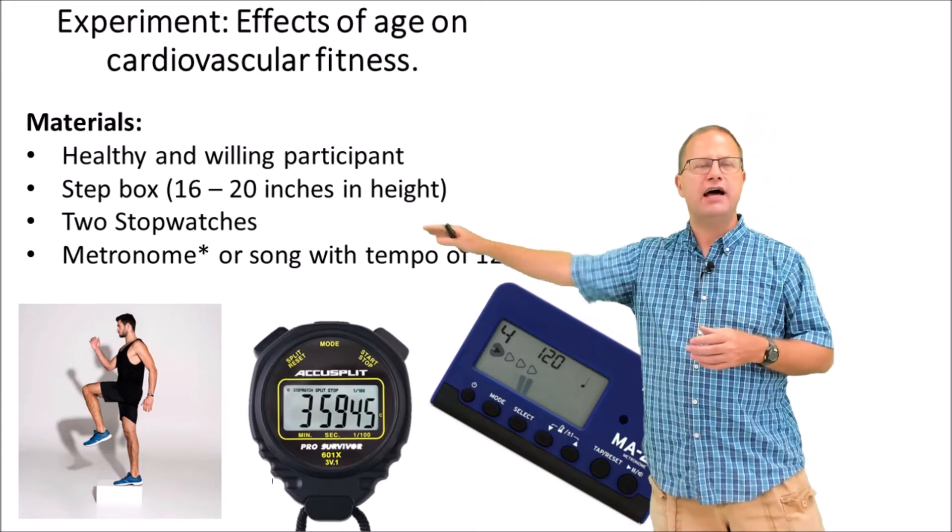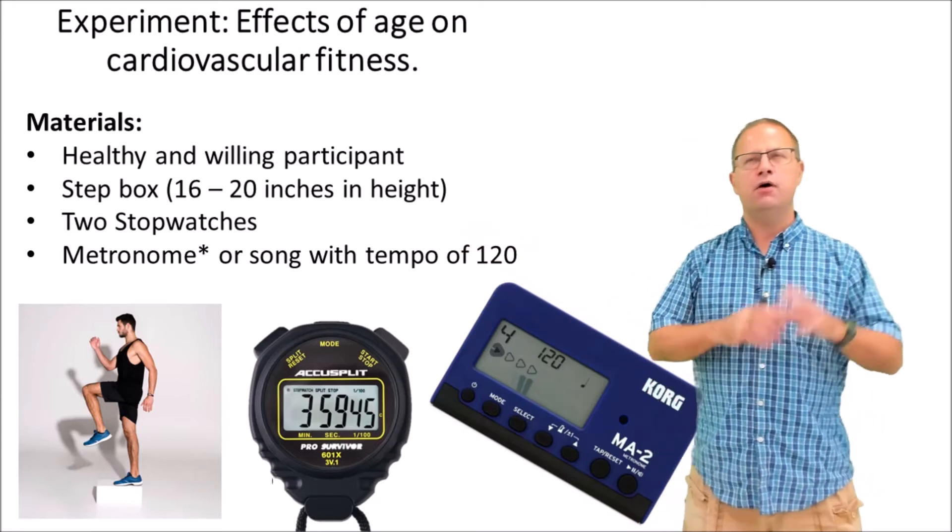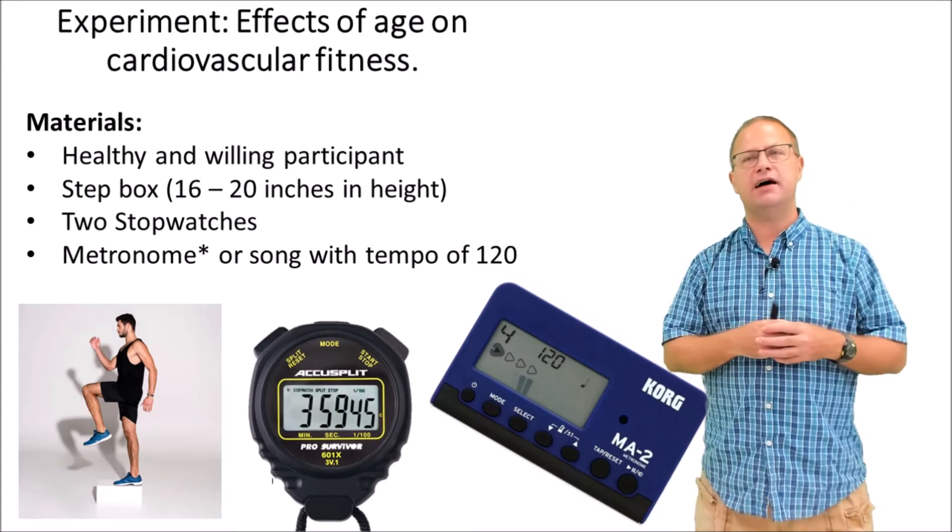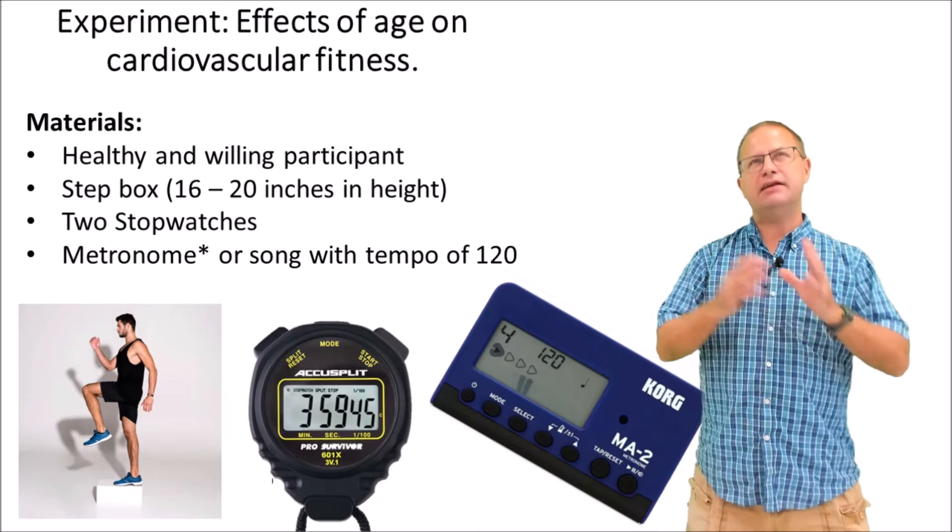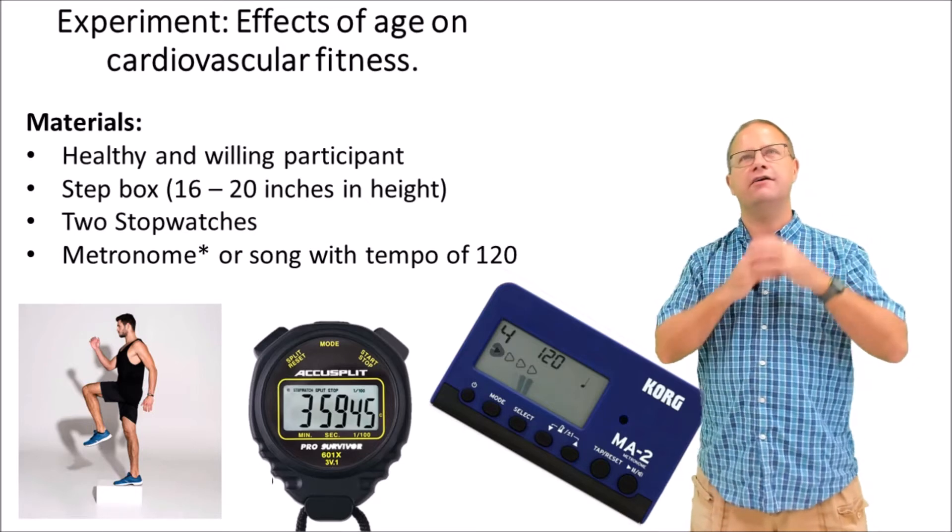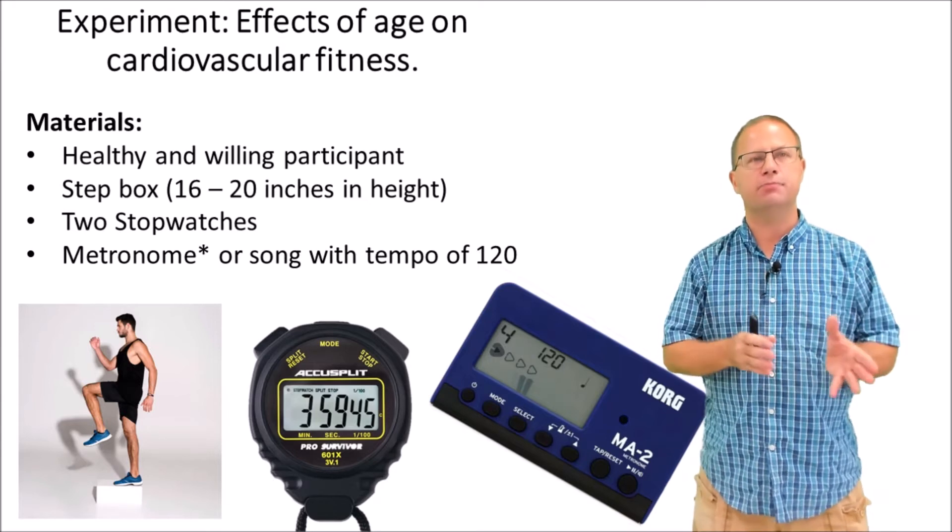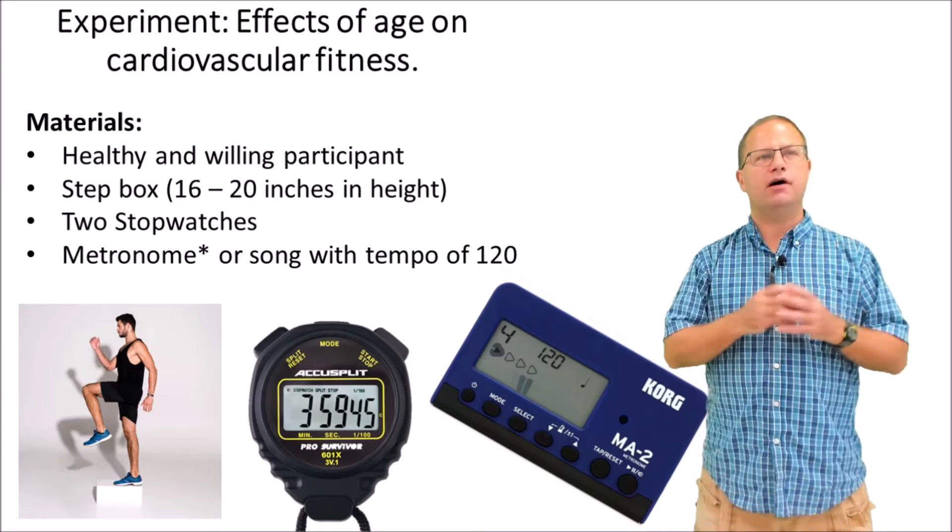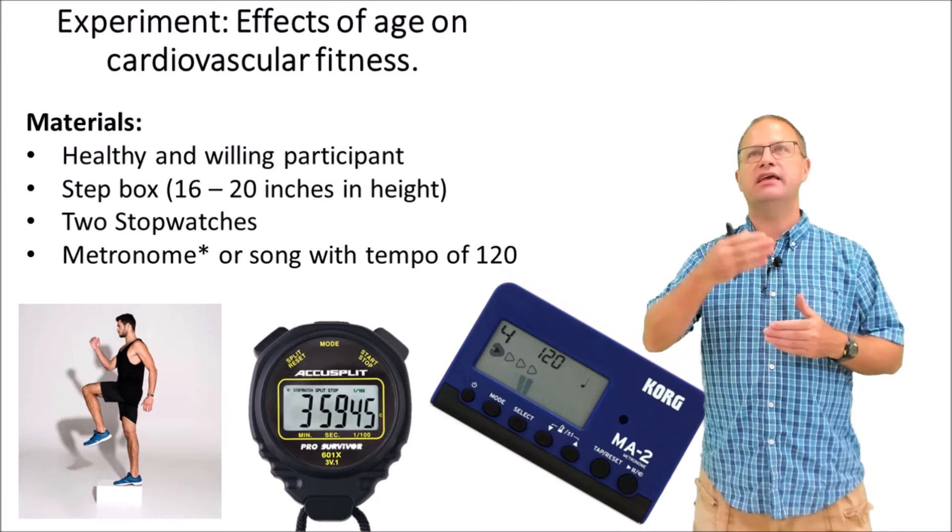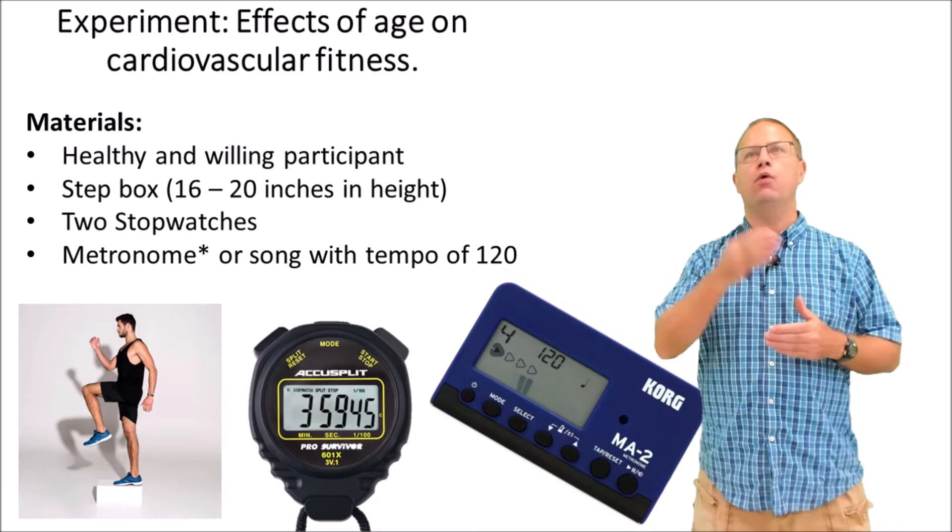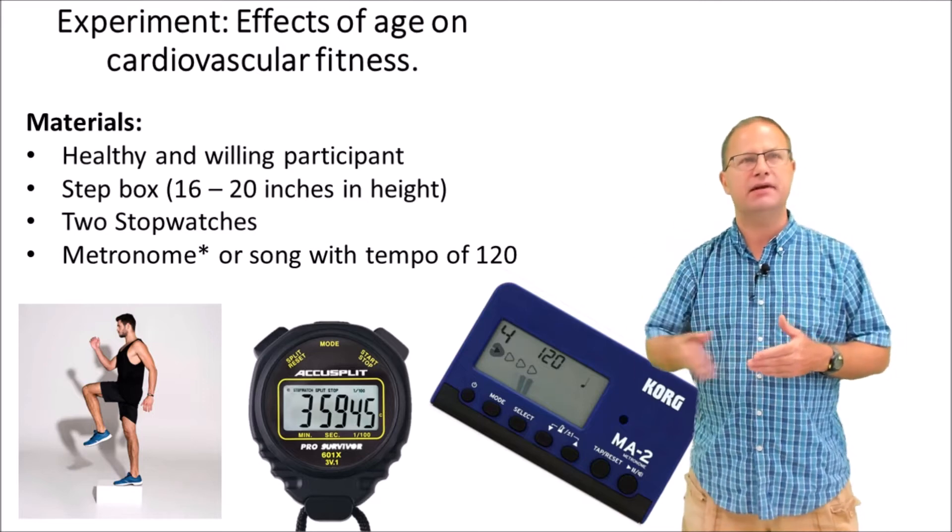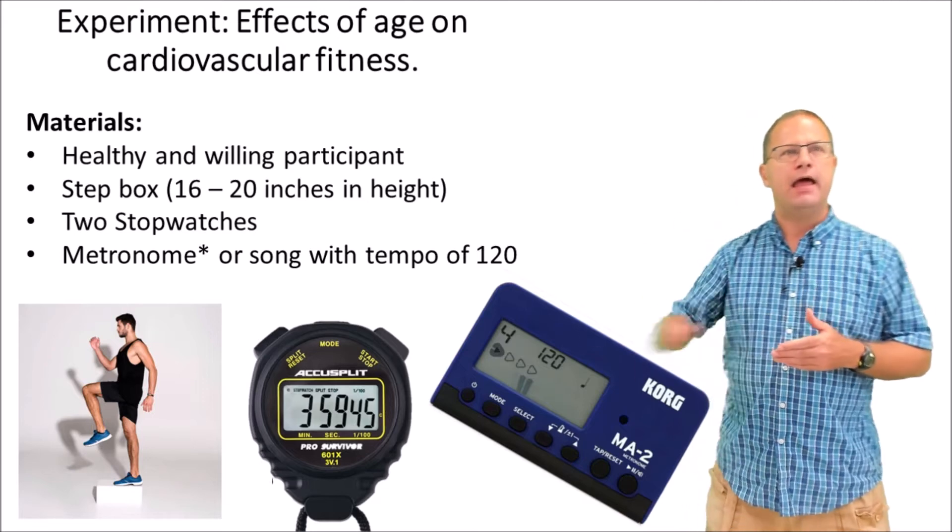You do need two timing devices or two stopwatches. One of those will be used to record the duration of exercise because although we want you to do five minutes of exercise, it's probably not going to happen for some people. So we want to make sure we record the total number of seconds of exercise for each person. The second stopwatch will be used to let us know when it's time to record the resting heart rate at one minute, two minutes, and three minutes after the exercise is stopped.